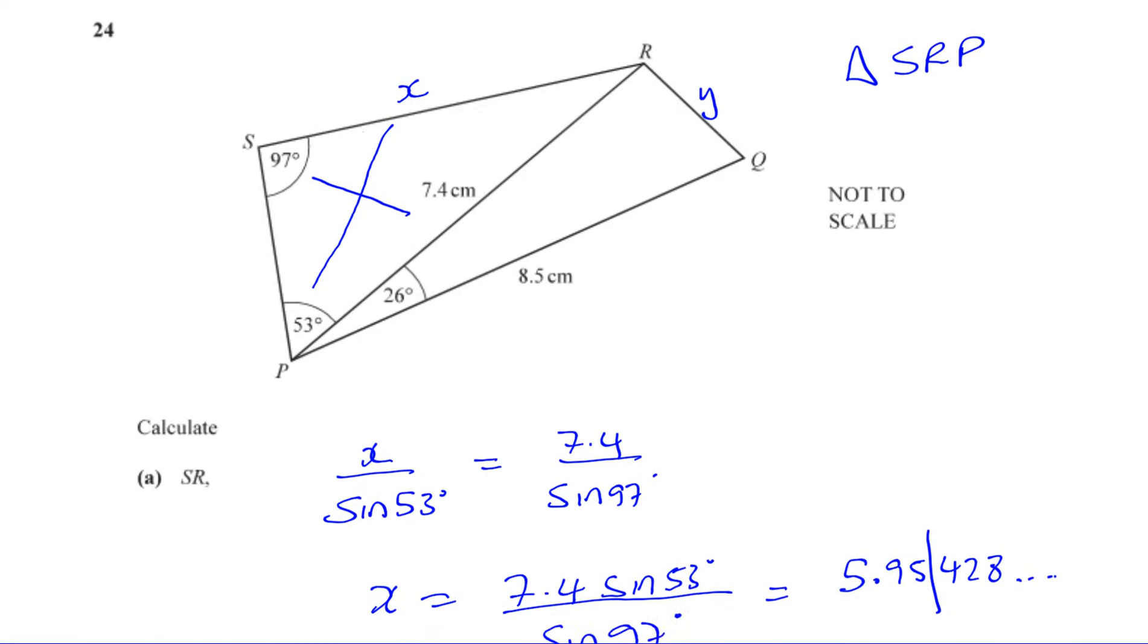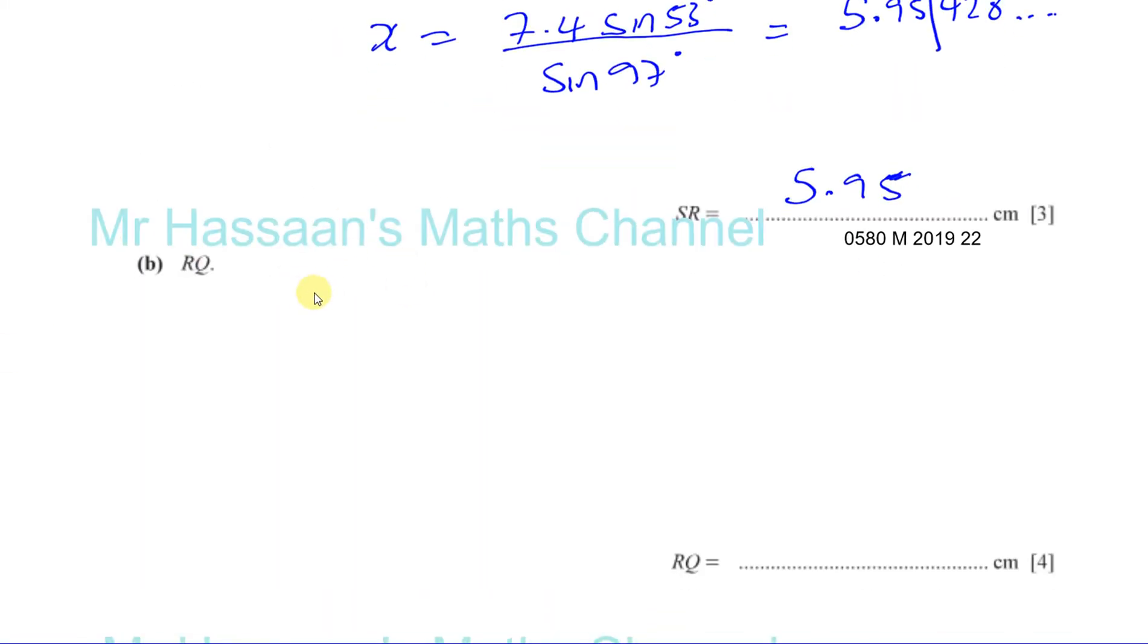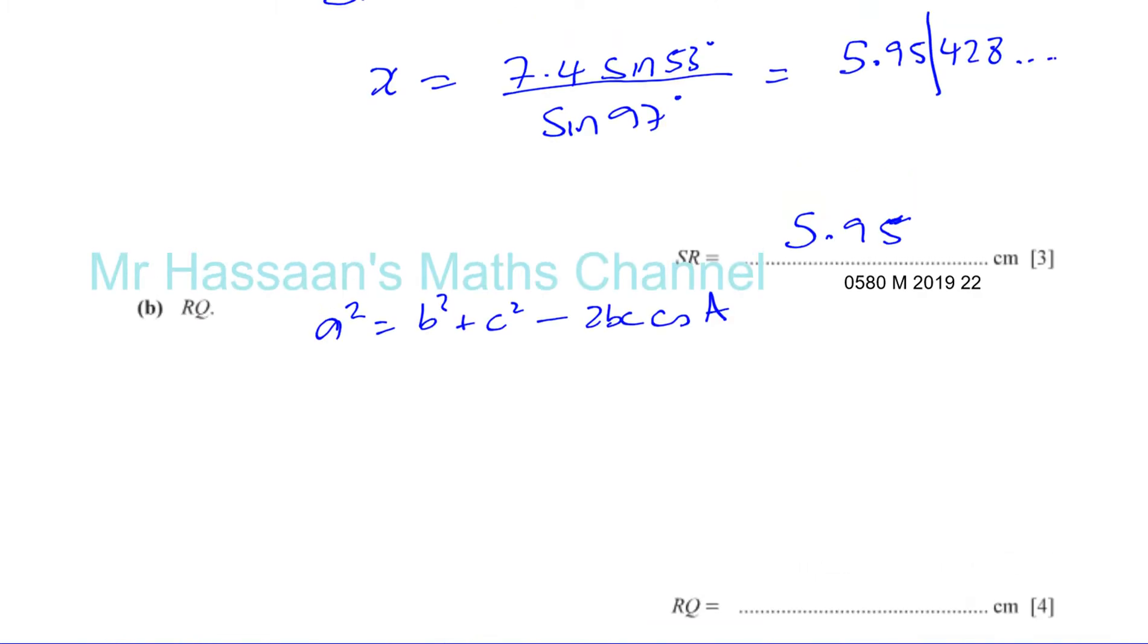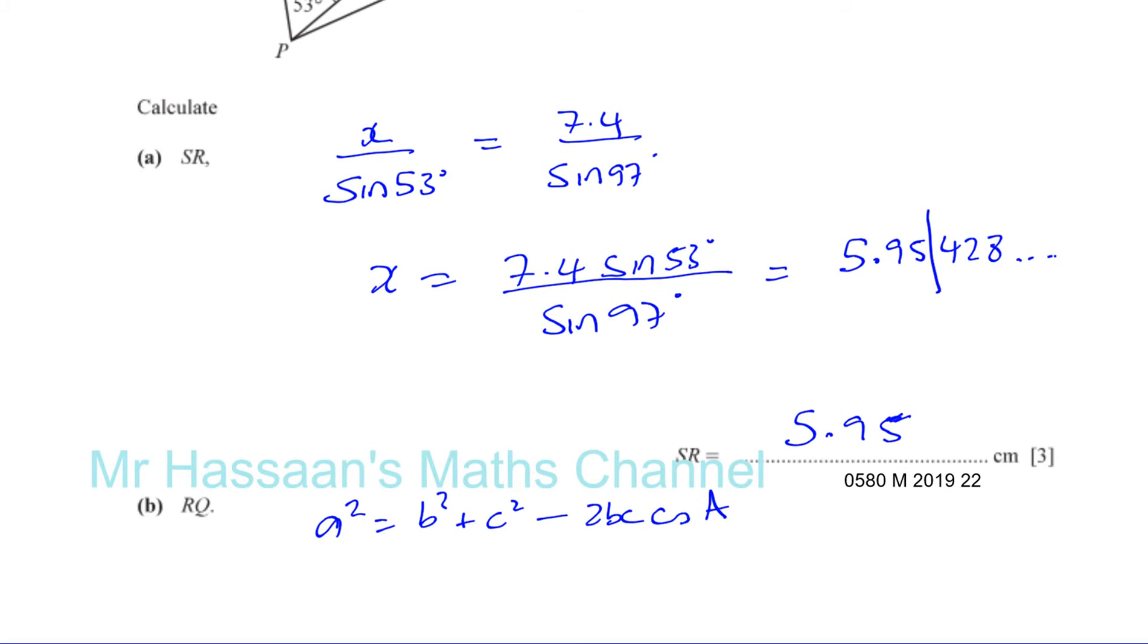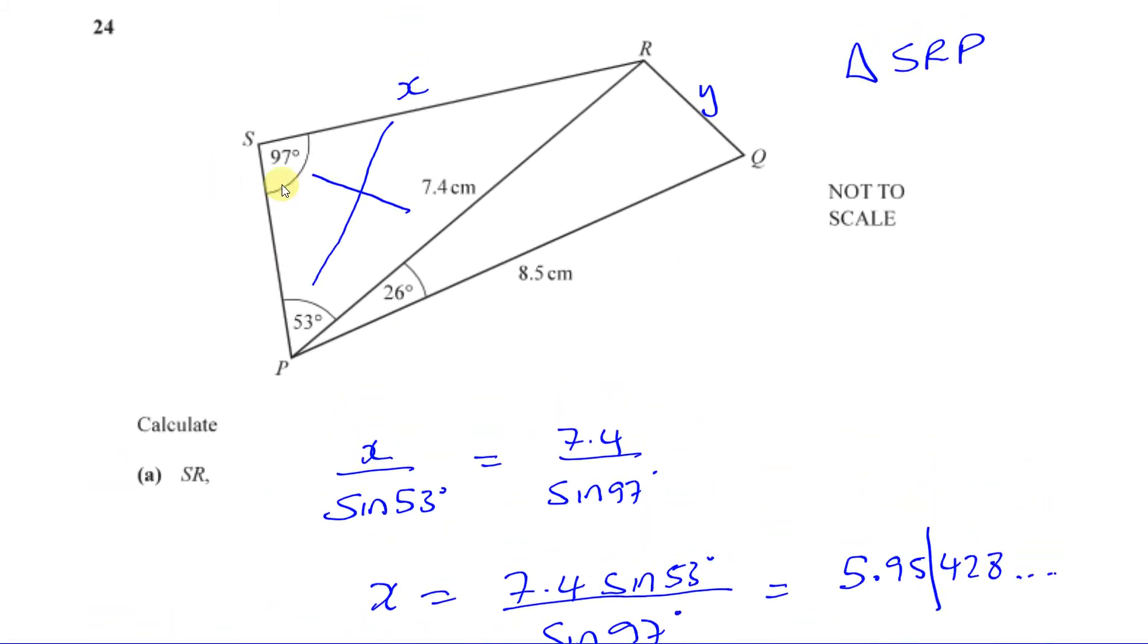Now the cosine rule, when you're finding a length, is A squared equals B squared plus C squared minus 2BC times cosine A. You're supposed to know that as well as the sine rule. However, it's not just good enough just knowing it like a parrot. You have to understand what it means. So the A is the side opposite the angle, the side you're trying to find, and the angle A must be the angle on the opposite side to that side. And the other two sides are B and C. It doesn't matter which one is which.